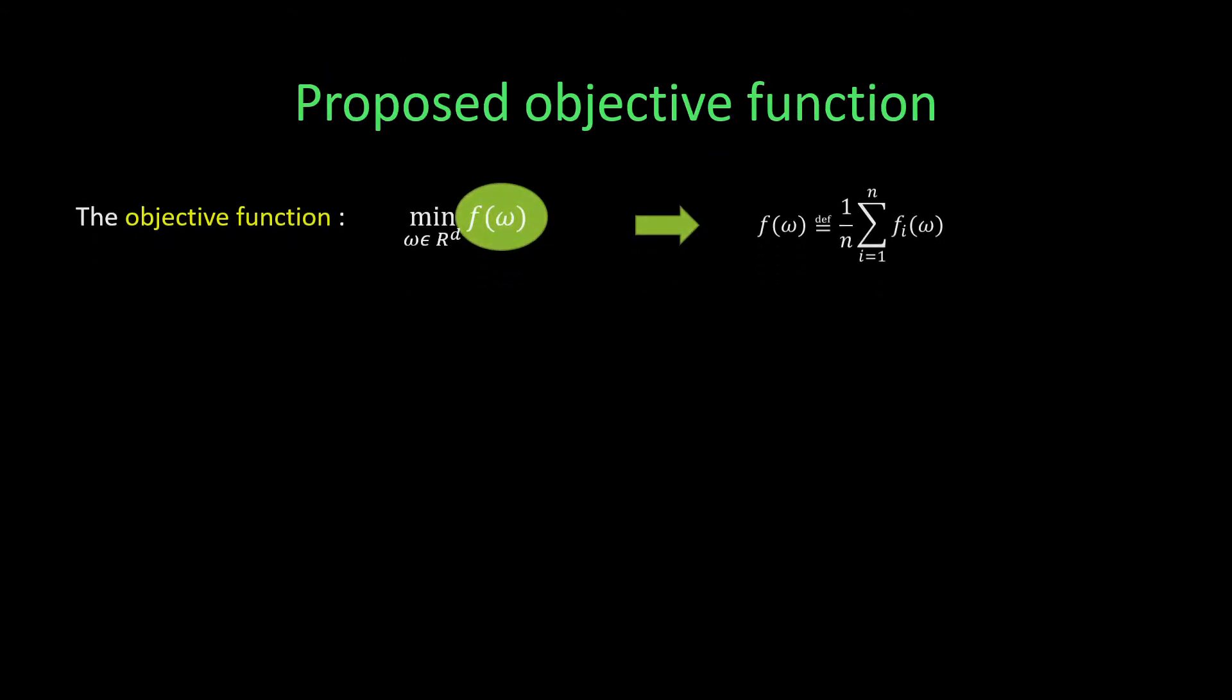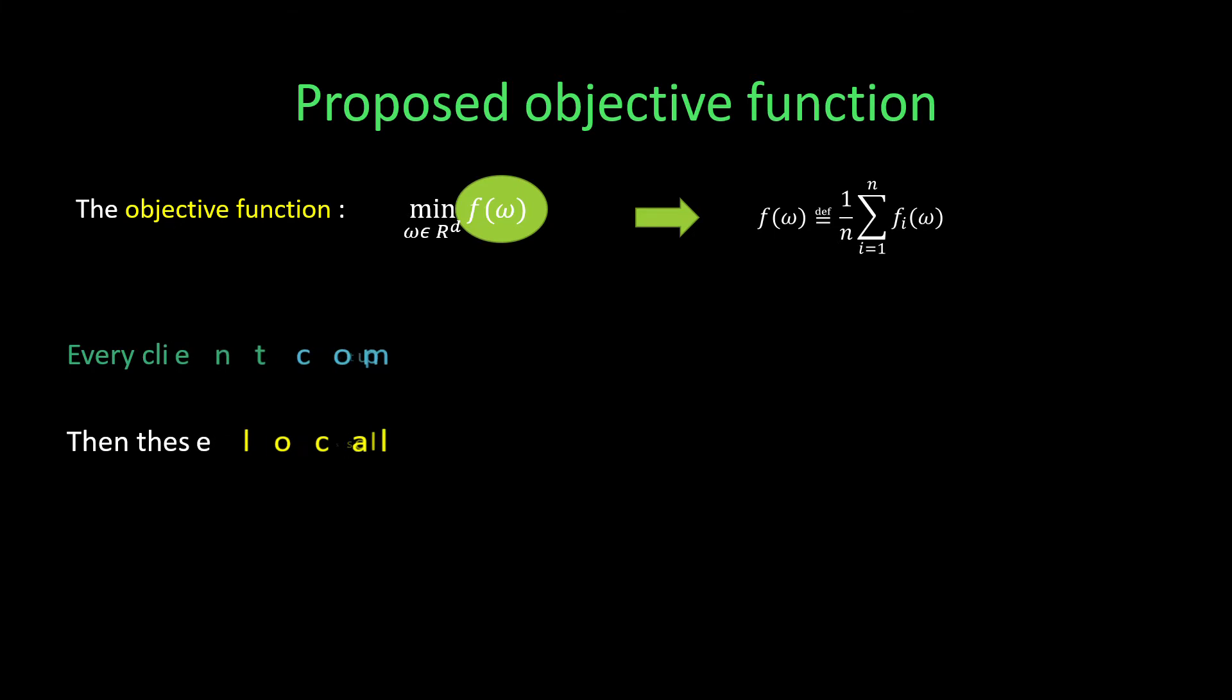The local loss function is actually any loss function that will be optimized with the local dataset. The objective function of federated learning is a weighted average of the local loss functions. When this function is optimized, all mobile devices would be optimized.